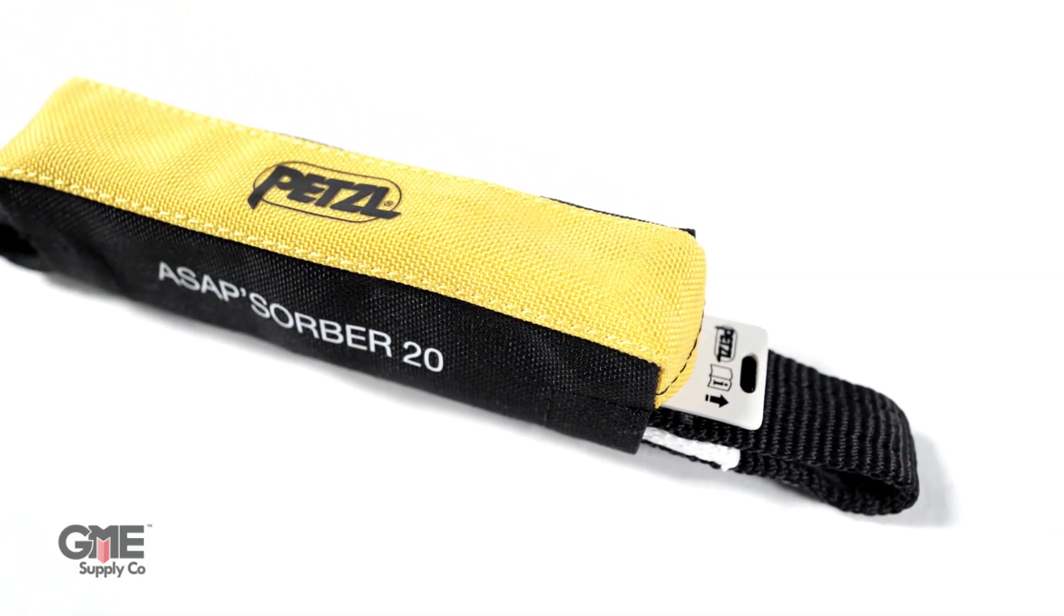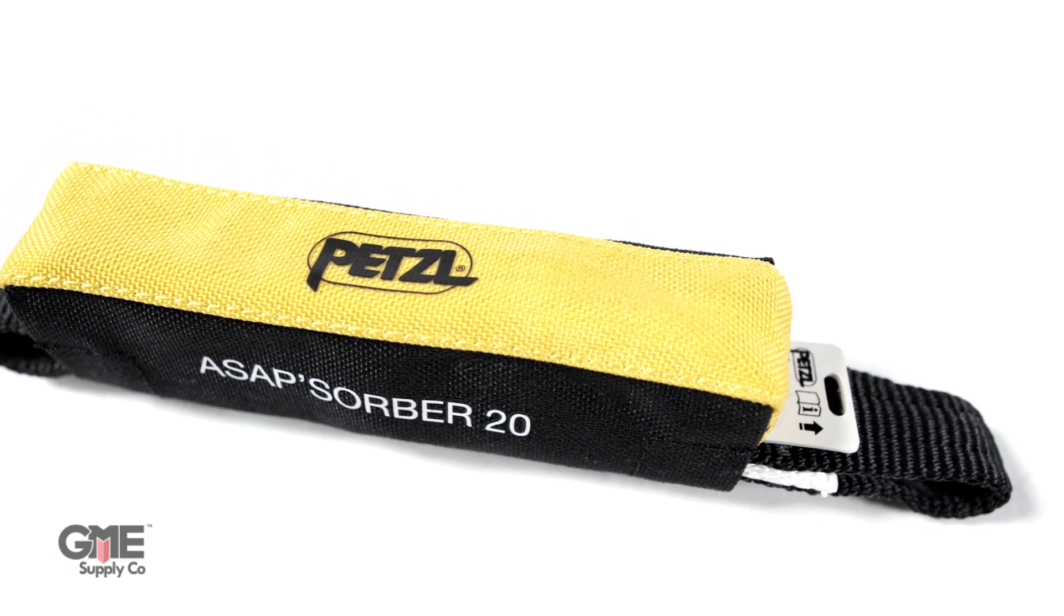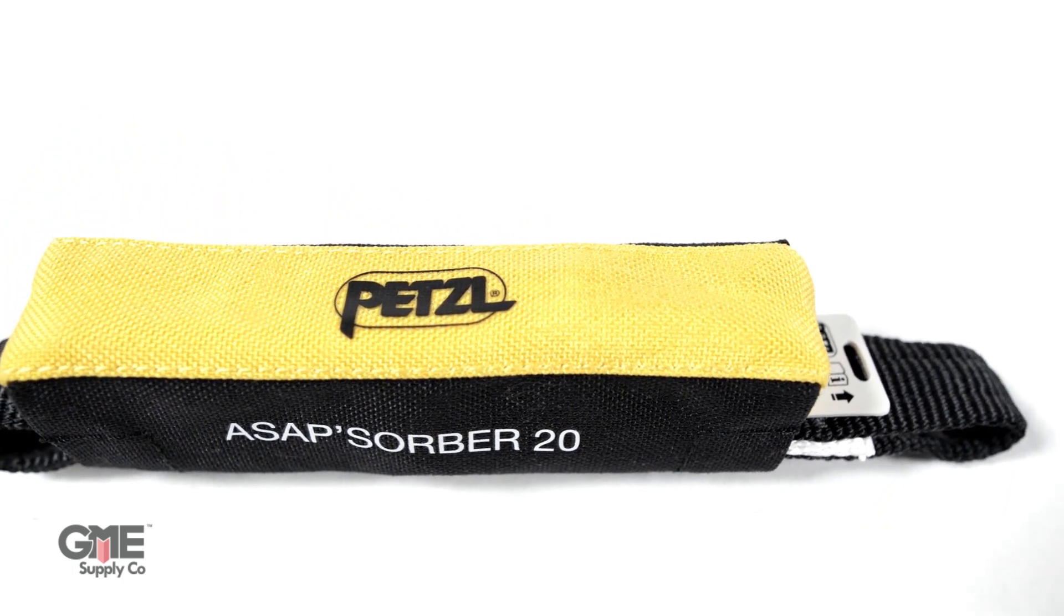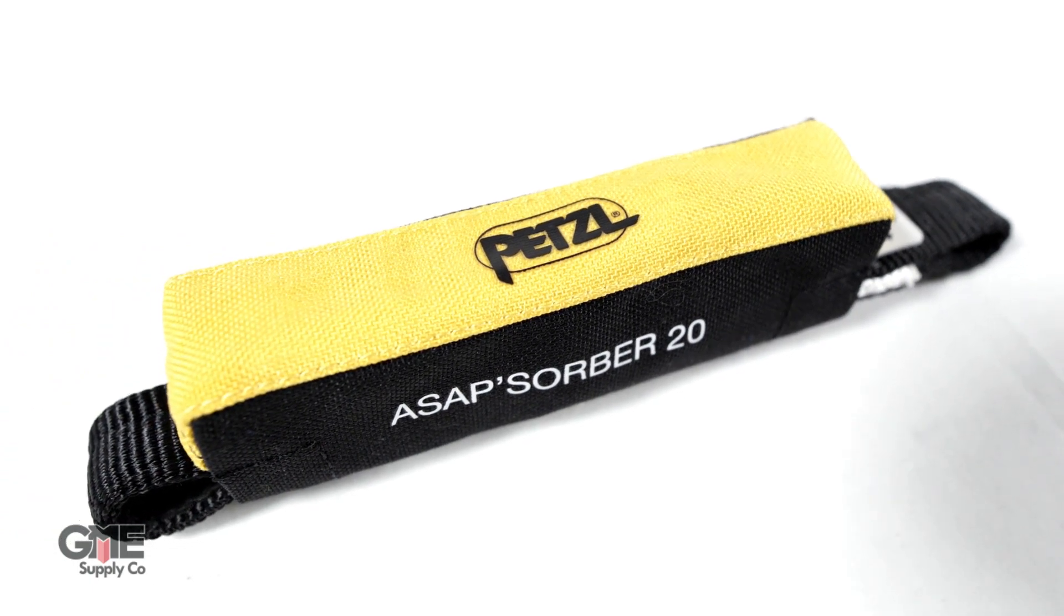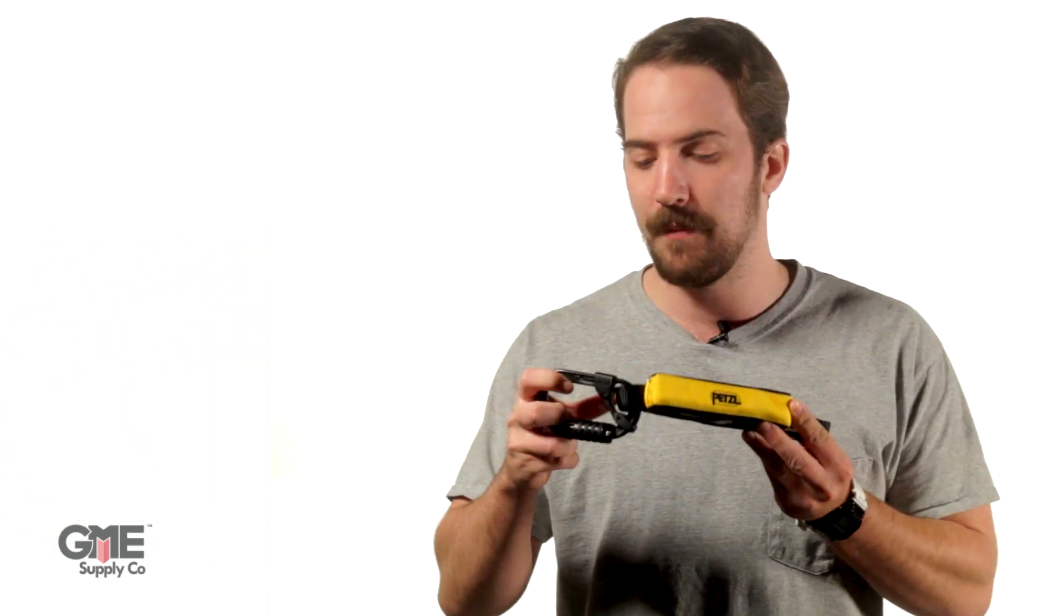The ASAP absorber connects to the ASAP lock to not only reduce impact forces during a fall, but also to allow the user to work at a distance from the rope. This energy absorber features webbing that's tightly packed into a durable compact pouch and meets ANSI Z359.13 testing when used with an ANSI rated carabiner, like Petzl's Oxan Triac lock and the included captive positioning bars.